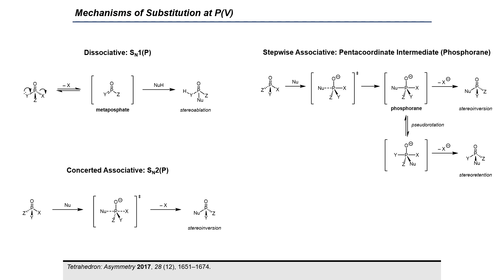The first type of mechanism is a dissociative mechanism, sometimes referred to as SN1P, in which phosphorus undergoes an elimination-addition process. First, phosphorus-5 undergoes elimination of a leaving group to form a trivalent intermediate, sometimes referred to as a metaphosphate. This highly reactive intermediate then reacts rapidly with a nucleophile in a subsequent step to afford the substitution product.